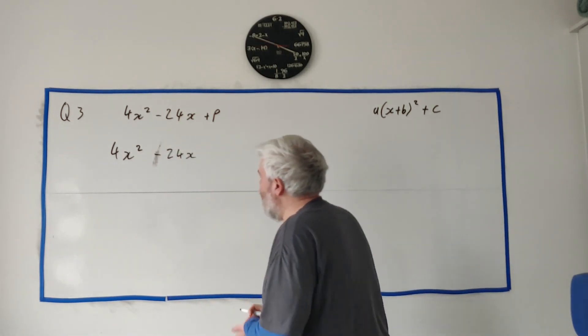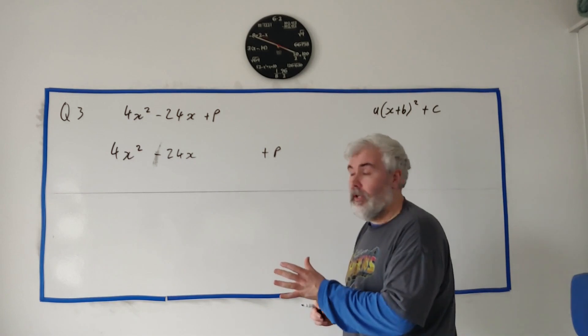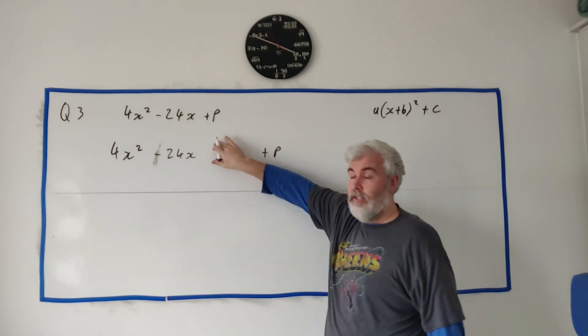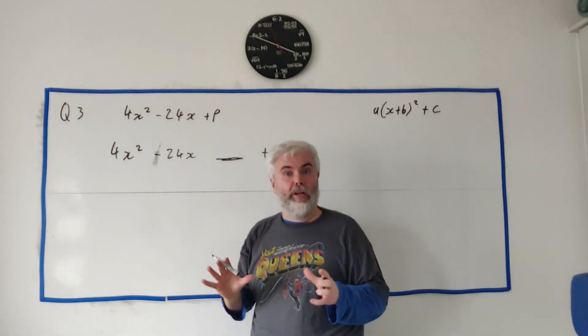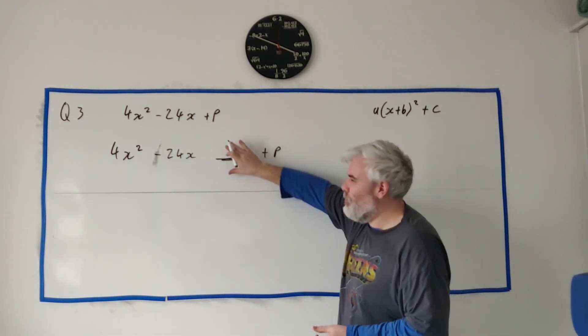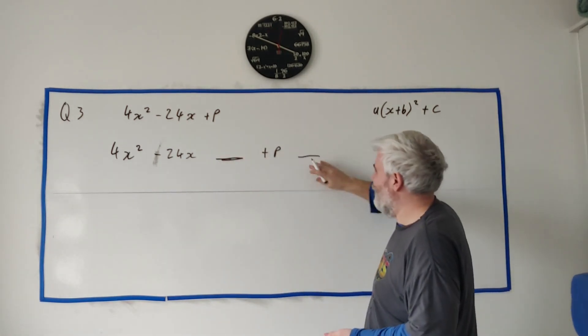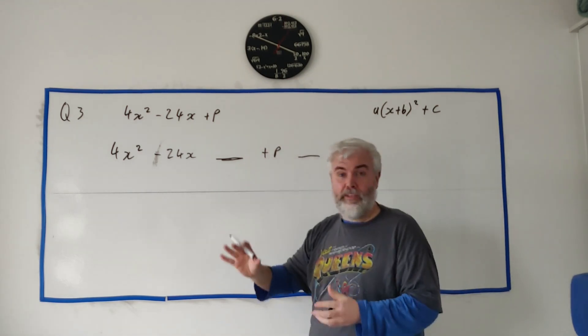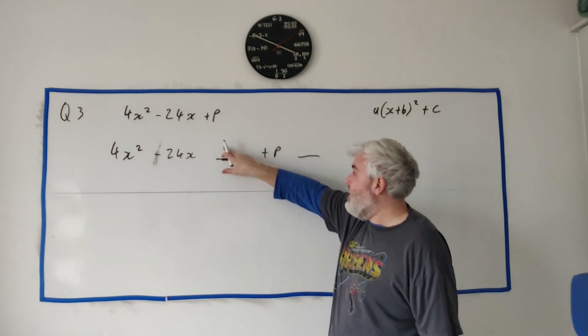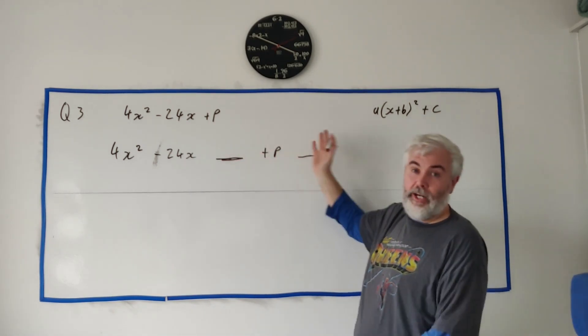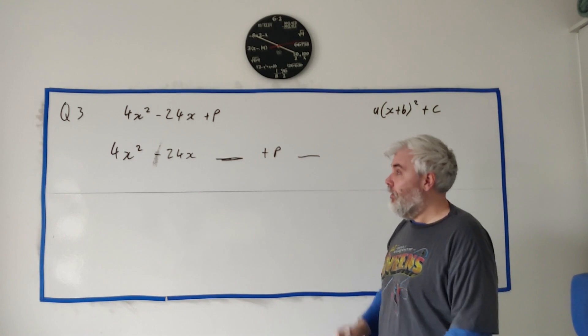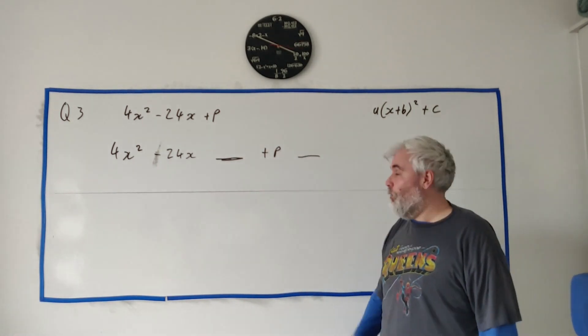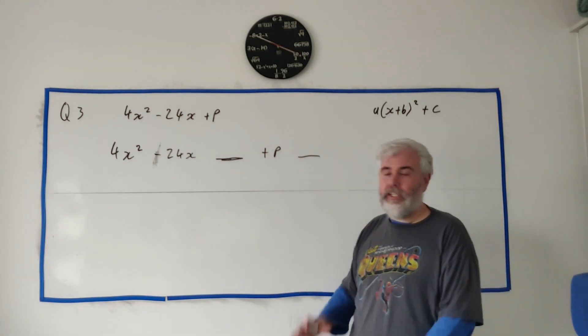I'll put the p over here. Basically, I cheat. I put in a new number. I'm going to put something new in here to make this look more like a square. And if I put something new in, I better fix it over here and take it back out. And I get to put anything I want in. I can put a 2 here and a minus 2, an 8 and a minus 8, a million and a minus a million. Really, anything I want. But only one number is going to help me complete this square.